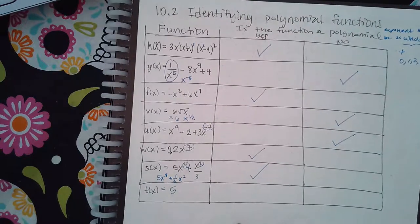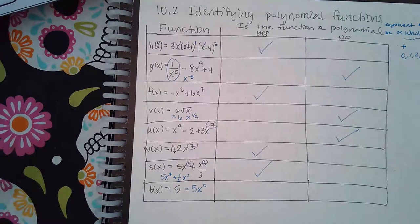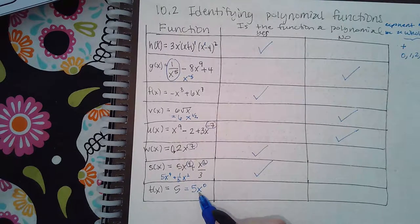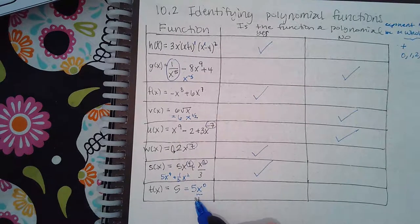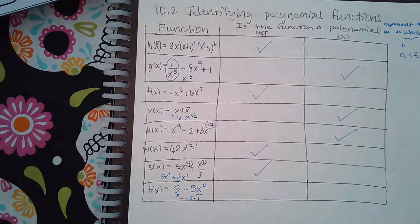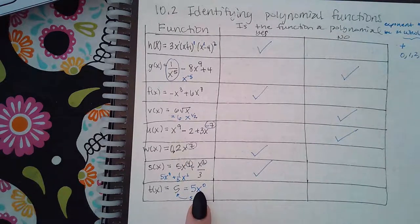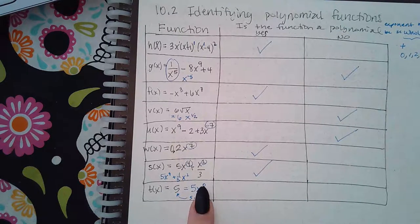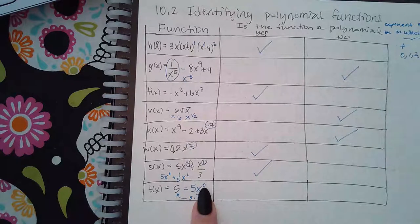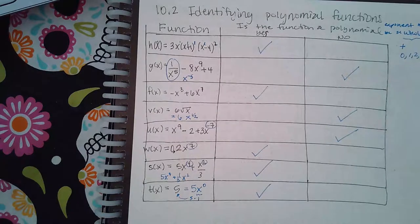This can actually be rewritten as five x zero because there's no x's there. And we know that x to the zero is just one. And what is five times one? It's just five, right? So these expressions are equivalent. And if I look at this, the exponent here on the variable is zero. Zero is a whole number. So this is also considered a polynomial.